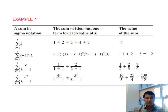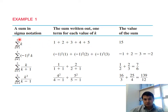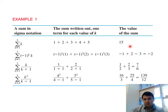A few examples: the first one has k running from 1 to 5 of k. You let k equal 1, 2, 3, 4, 5 and sum them up. The left column shows the compact sigma notation form, the middle column shows the expanded form, and the right column is the answer. Summing 1+2+3+4+5 gives 15.